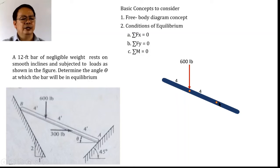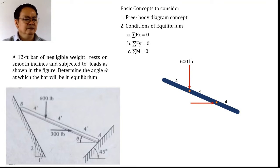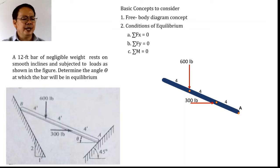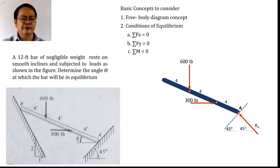From that point, measured four feet further — or four feet from the bottom — there is another force acting horizontally with a magnitude of 300 pounds. At point A, there is a plane inclined at 45 degrees, so the force exerted by the plane is perpendicular to the plane and therefore acts at 45 degrees with respect to the horizontal.